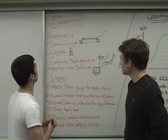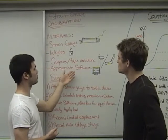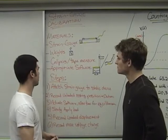All right, to calibrate our strain gauge, we're going to want a strain gauge, a couple of different sets of weights, calipers or tape measure, and of course the appropriate software. And again, we have that on the computers here.